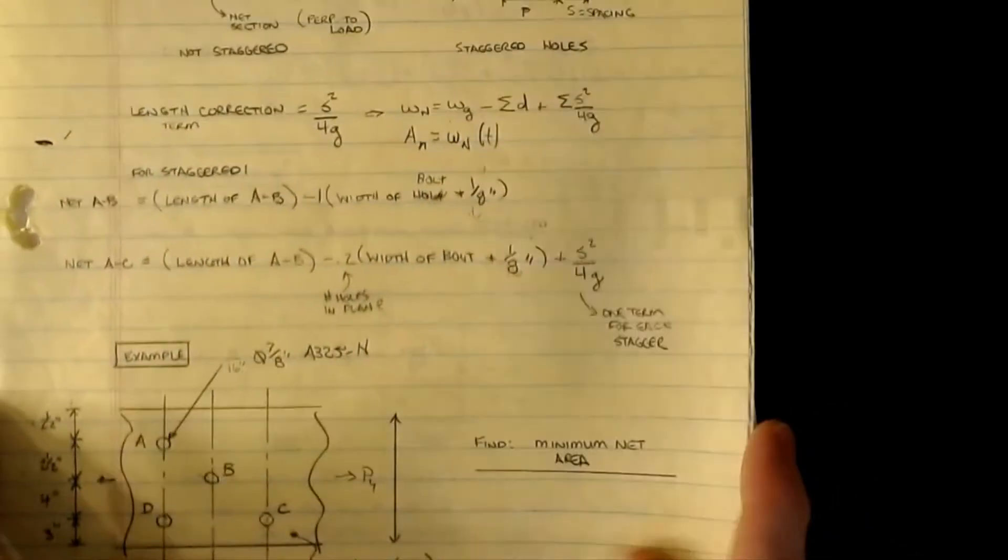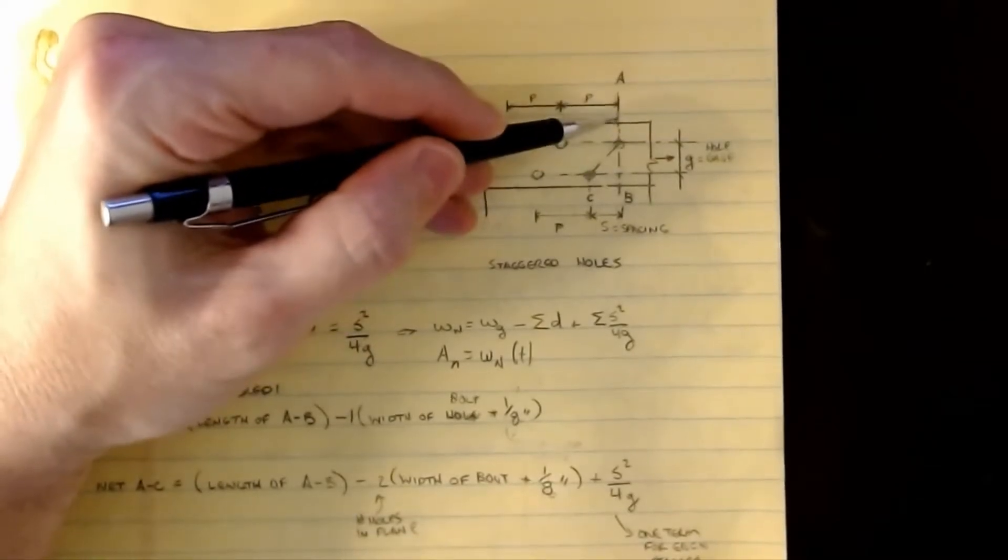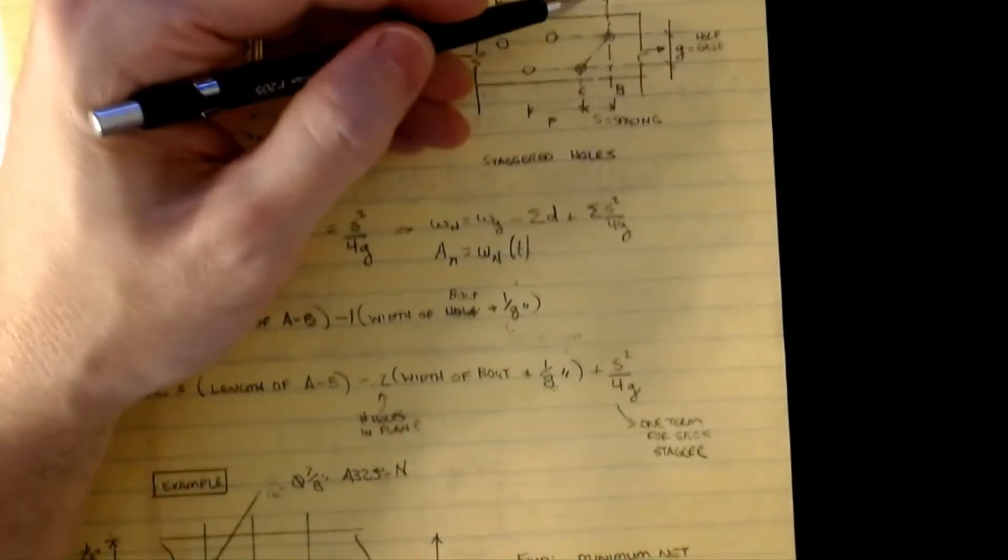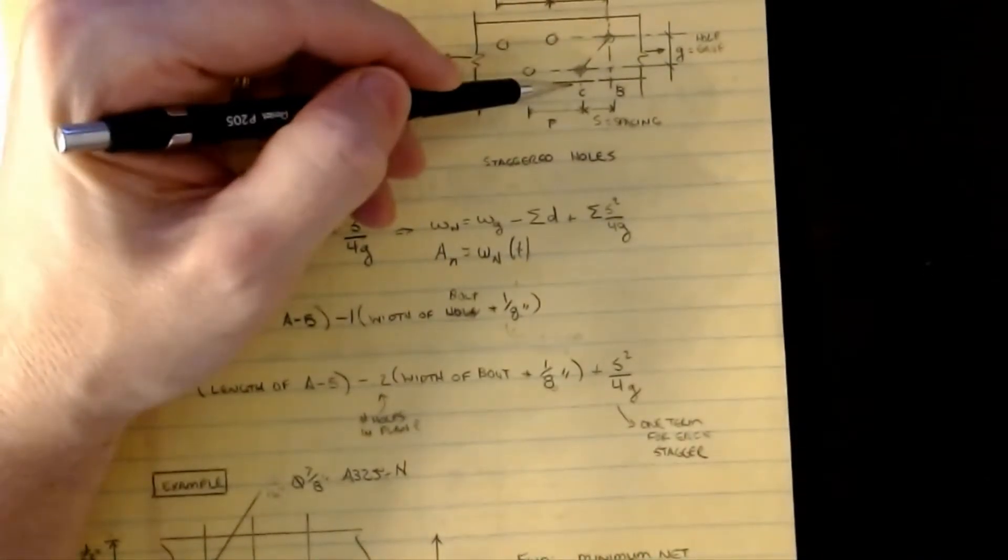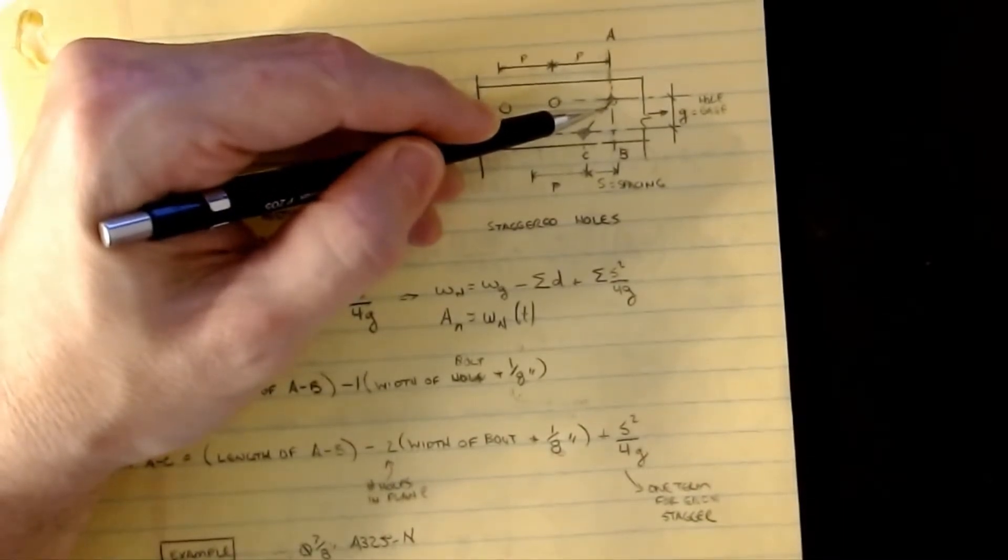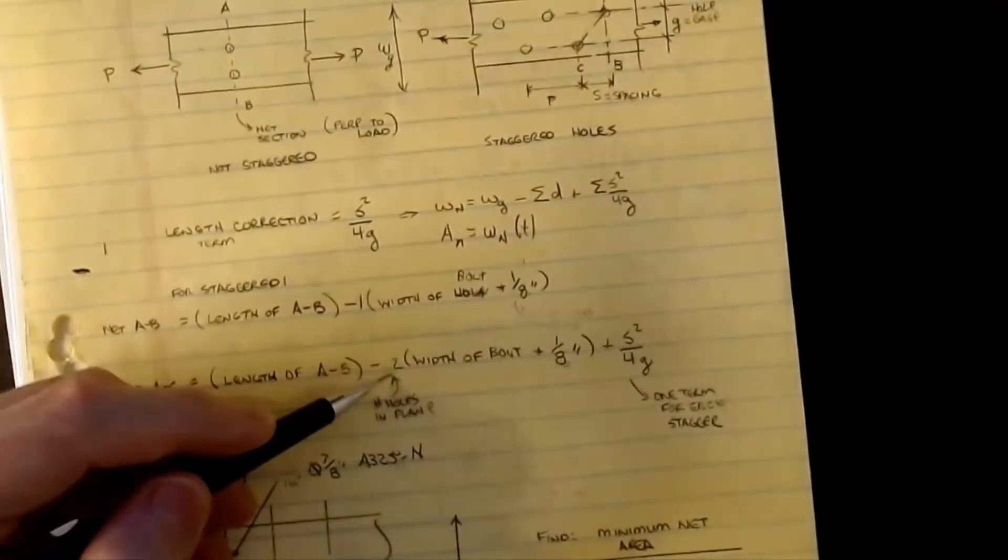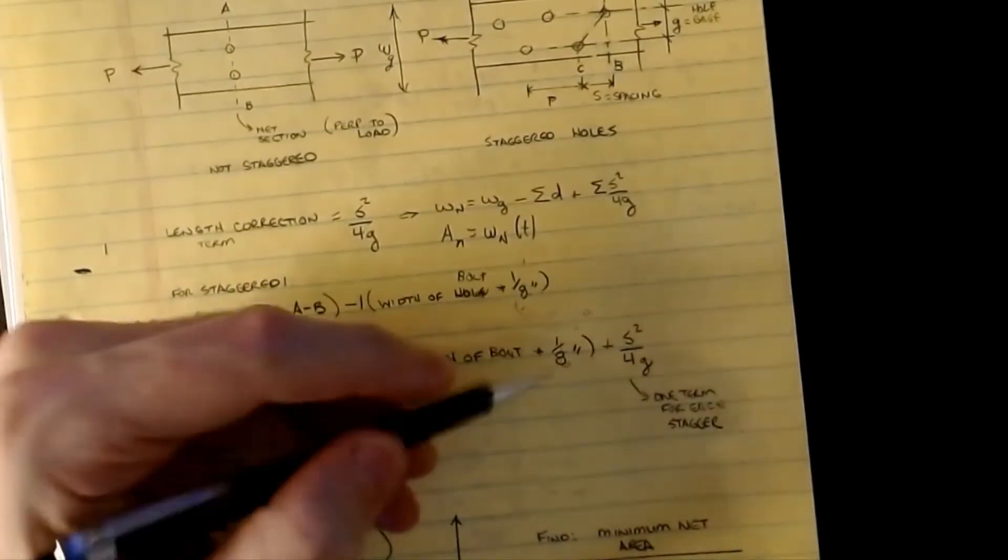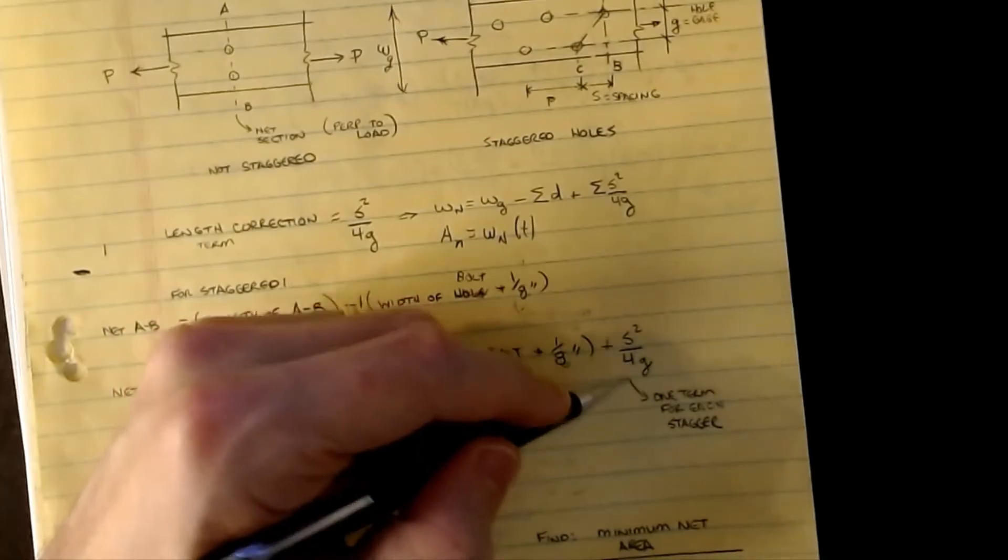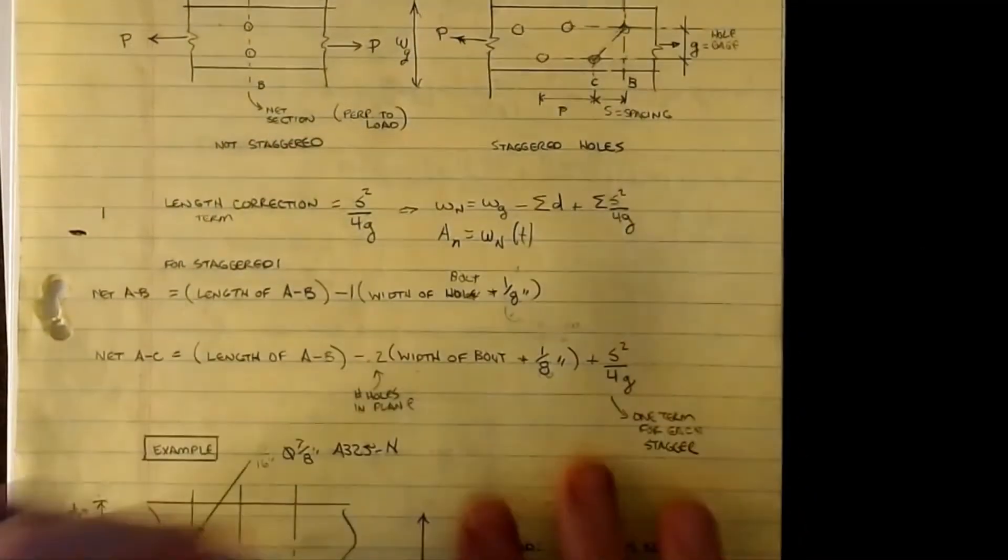For A-C, the correction is the width of the plate WG, and then I subtract off the number of holes on path A-C. There's two holes - it's a half diameter to the center of the hole and center to edge is another half diameter, so that's a full diameter even though it's not straight across. So two times the diameter of the bolt plus the eighth inch, plus now this correction term S squared over 4G.